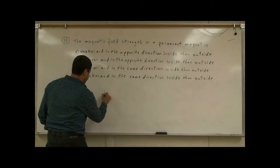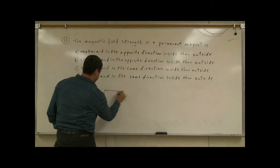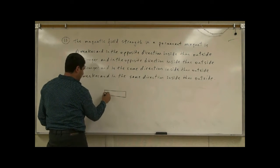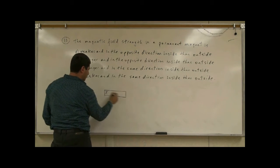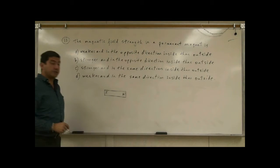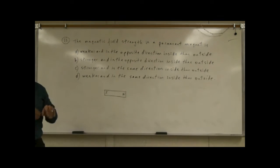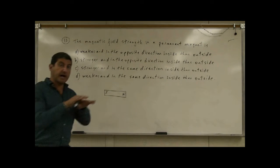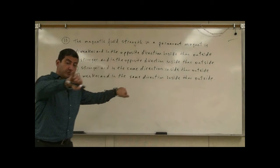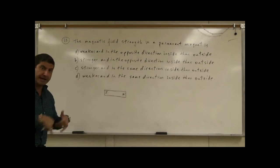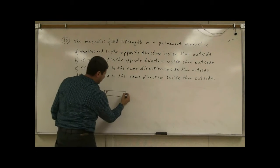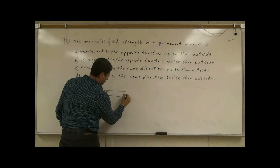Let's look at the magnetic field of a magnet. A typical magnet will have a south pole and a north pole. Magnetic field lines will come out of the north pole, wind around and come back into the south pole. So the field lines look like this.